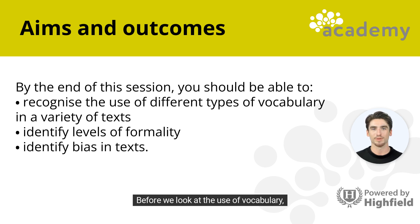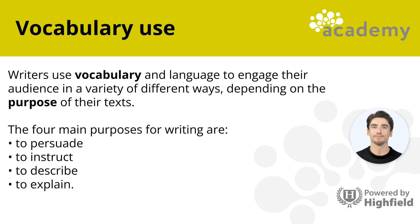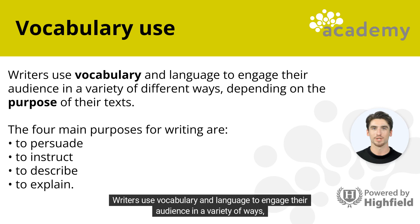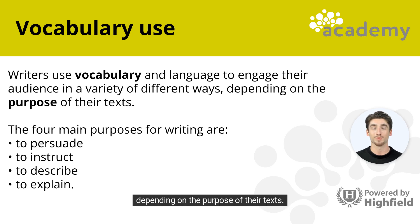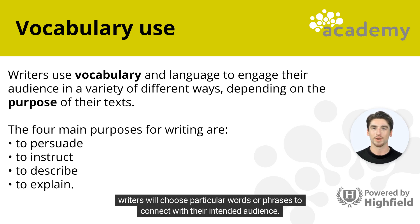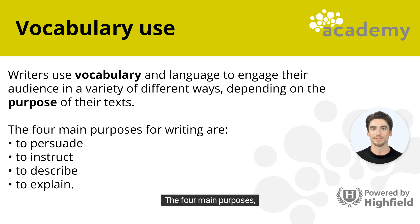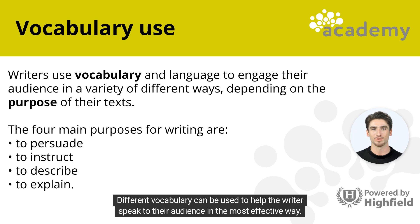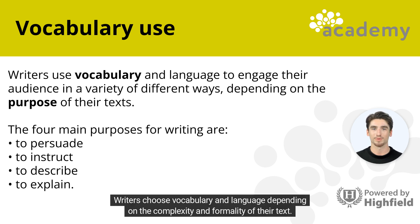Before we look at the use of vocabulary, let's review the four purposes of texts. Writers use vocabulary and language to engage their audience in a variety of ways, depending on the purpose of their texts. Writers will choose particular words or phrases to connect with their intended audience. The four main purposes for writing are to persuade, to instruct, to describe, and to explain. Different vocabulary can be used to help the writer speak to their audience most effectively, depending on the complexity and formality of their text. Remember, texts can be formal or informal.